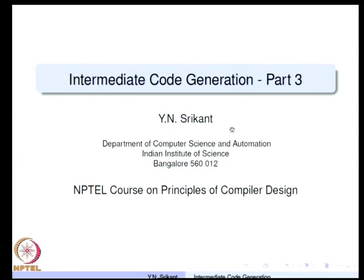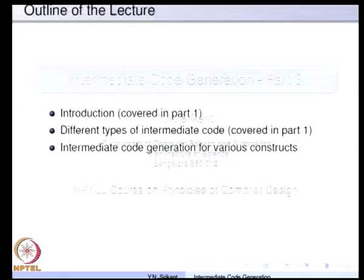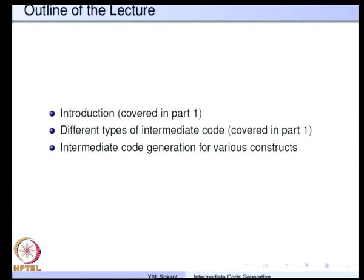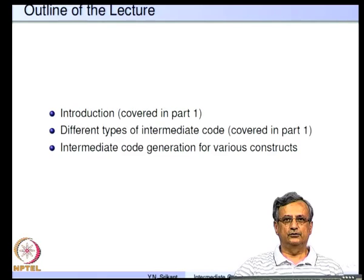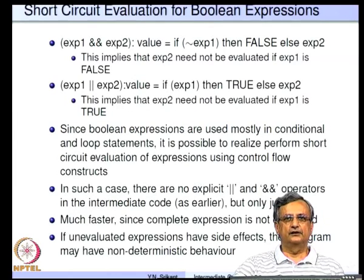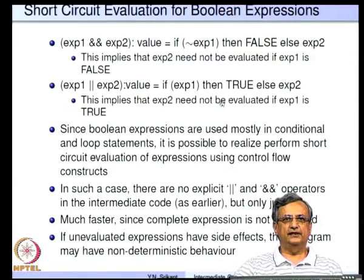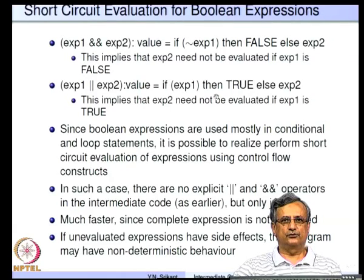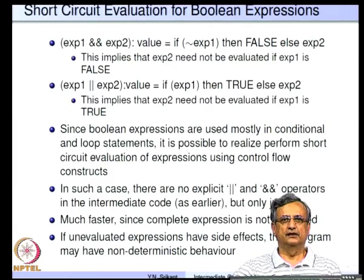Welcome to part 3 of the lectures on intermediate code generation. Today we will continue to discuss the code generation strategies for various constructs. We briefly discussed short-circuit evaluation of Boolean expressions in the last lecture. Today let us consider it in detail and see what difficulties it can actually give rise to.